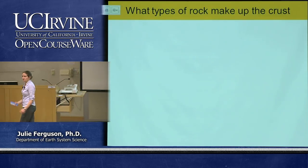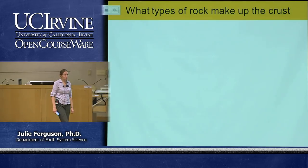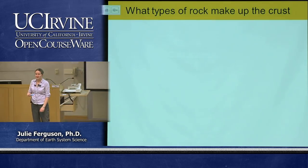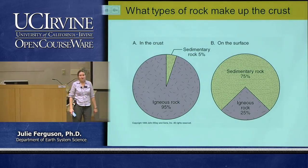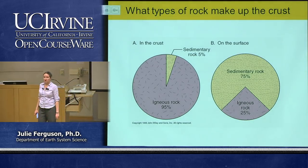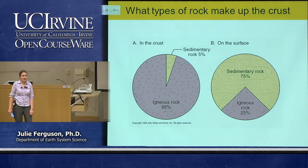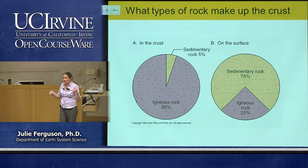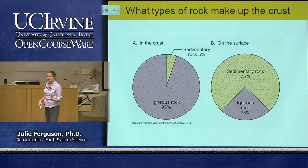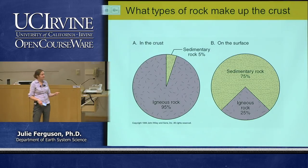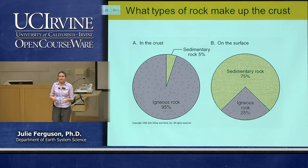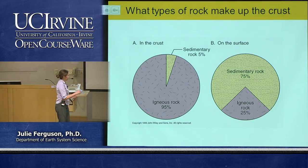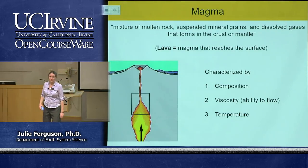Which of those three rock types is most important for the crust? Igneous rocks make up 95% of the earth's crust. We don't necessarily see all of that because a lot of igneous rocks are much deeper down. What we tend to see at the surface is the effect of wind, ice, and water — sedimentary rocks — but deep down we have enormous amounts of igneous rock.